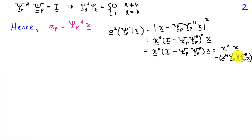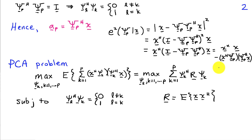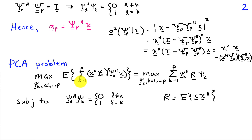Multiplying through, we have x^H x, which doesn't depend on psi_p, minus x^H psi_p times psi_p^H x. This is an inner product of vectors. So the PCA problem — minimizing the average squared error over x — is equivalent to maximizing the value of this second term. Breaking this up into the columns of psi_p, we can write this inner product as the sum over k from 1 to p of x^H psi_k times psi_k^H x.